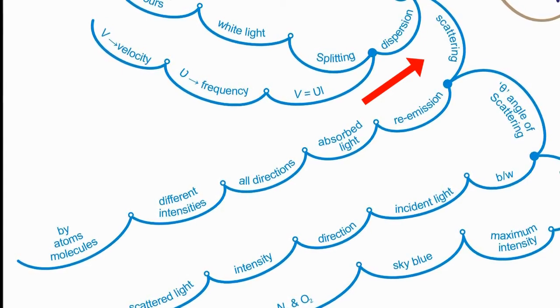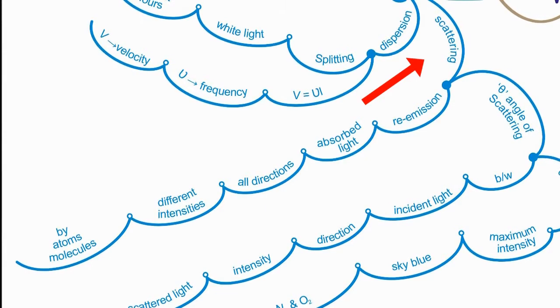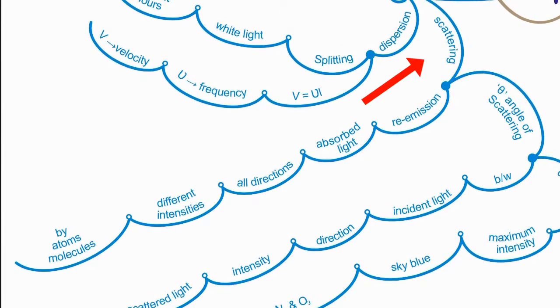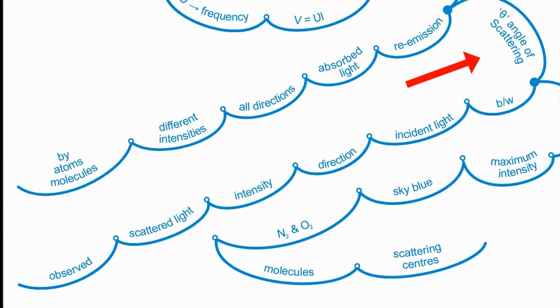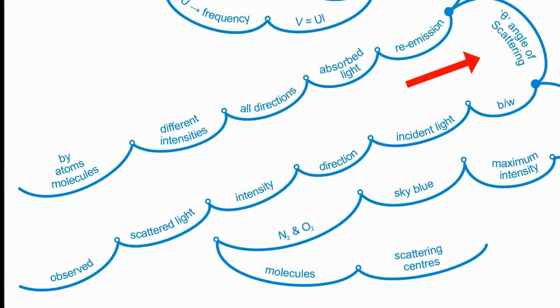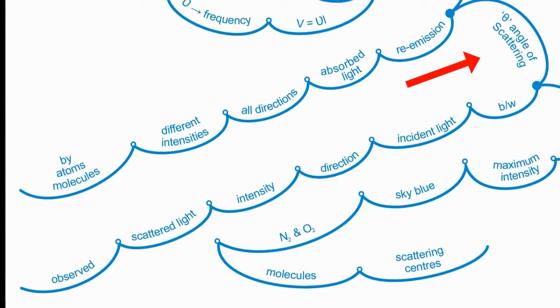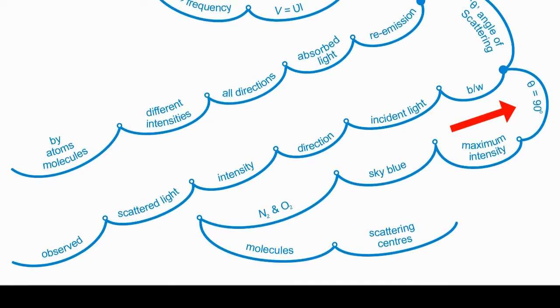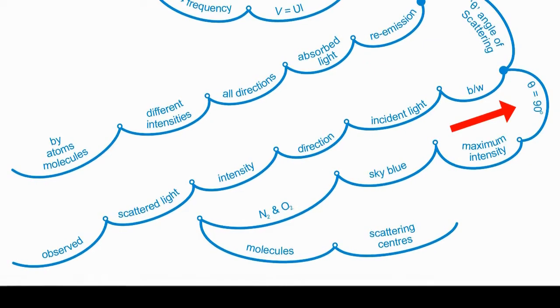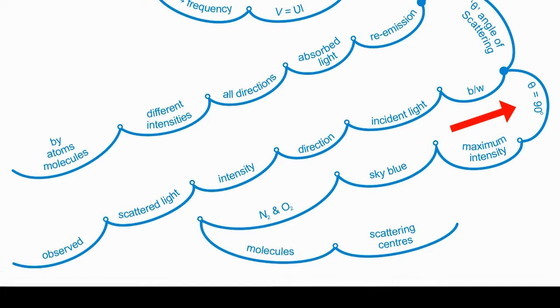This is called scattering of light. The angle of scattering is denoted by theta and it is taken between incident angle and the direction in which the intensity of scattered light is observed. If the angle is equal to 90 degrees, it is called maximum intensity.